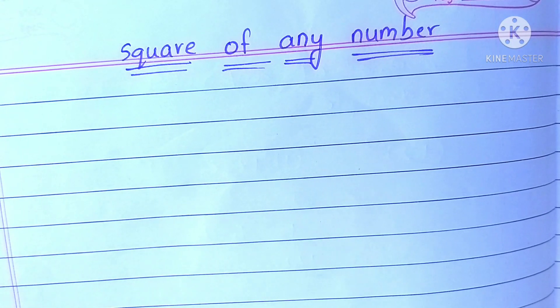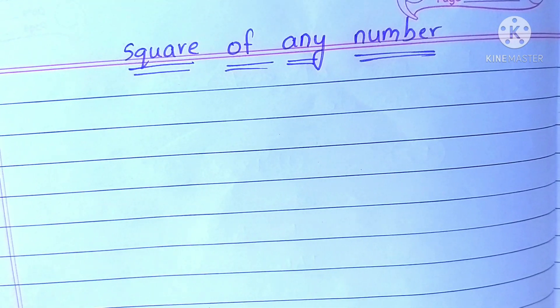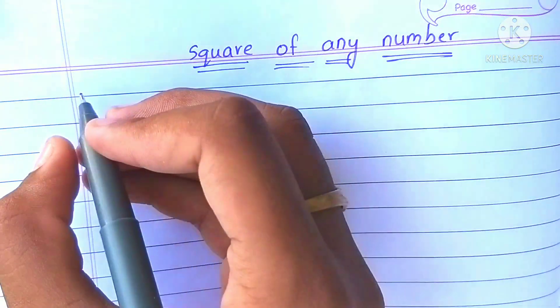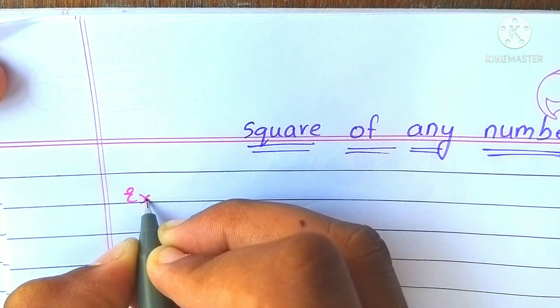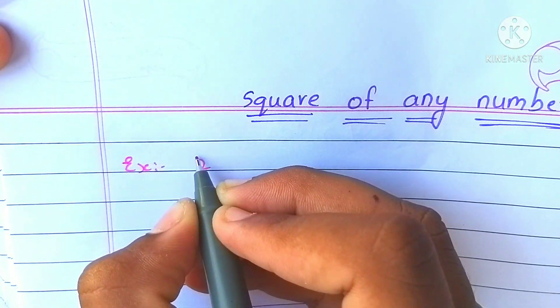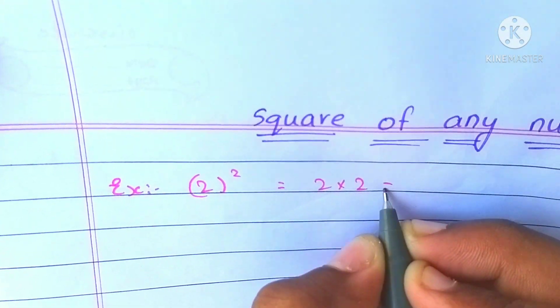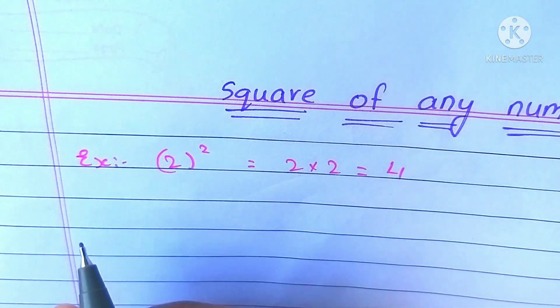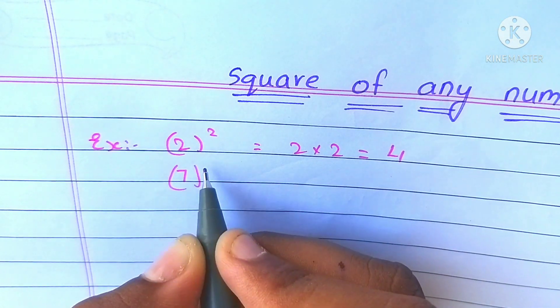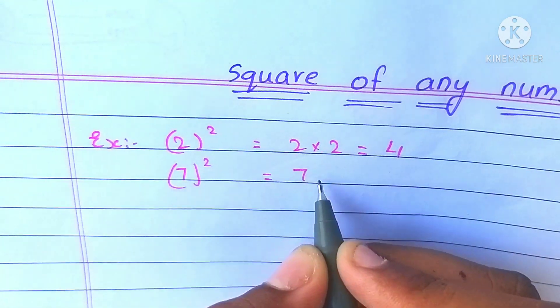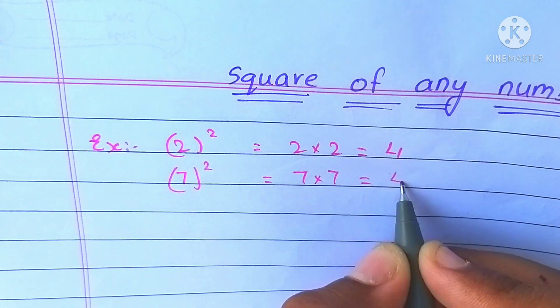We know that square of 2, for example, 2 square is equal to 2 into 2 which is 4. 7 square is equal to 7 into 7, which is 49.